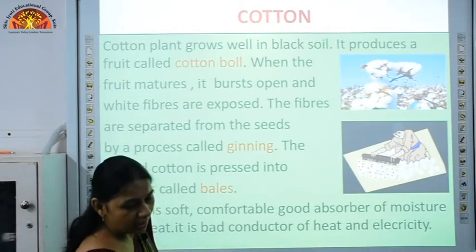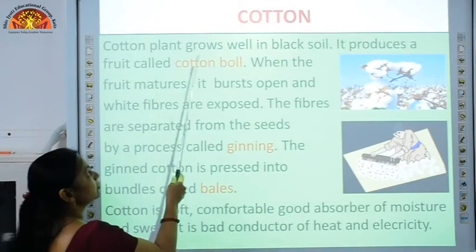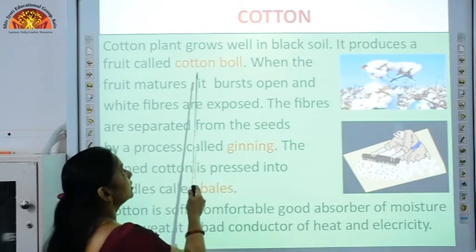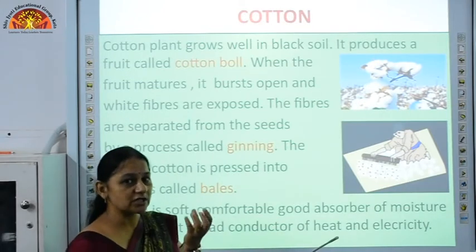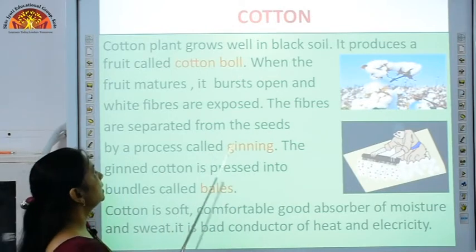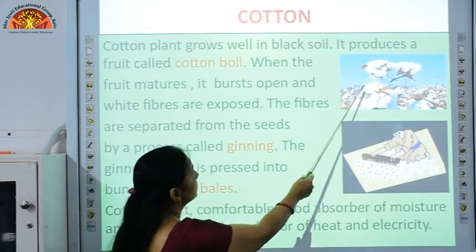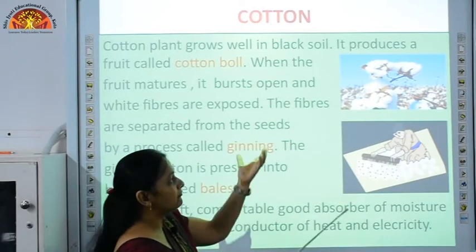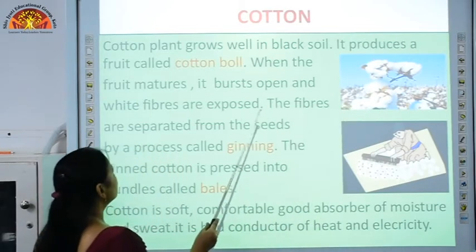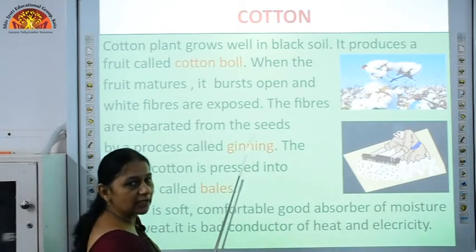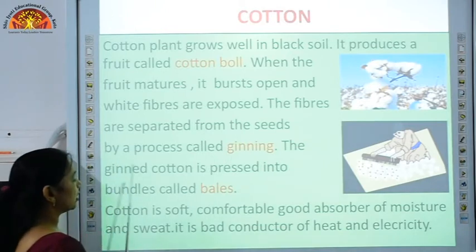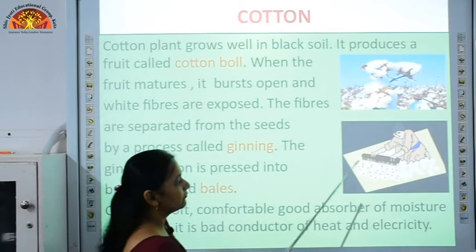First we are going to take up cotton. How is cotton produced? Cotton plant grows well in black soil, which is very suitable for cotton plants, and it needs a warm climate. It produces a fruit called cotton ball — a lemon-shaped green fruit. When this fruit matures, it becomes brown in color and it bursts open, exposing the white fibers. When these white fibers dry in the sun, the seeds are removed from the fibers by a process called ginning. The ginned cotton is then pressed into bundles called bales.